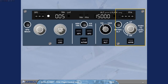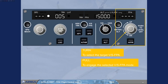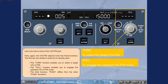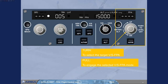Let's now have a look at the vertical speed flight path angle part. The vertical speed flight path angle selector knob has three functions. The turn function enables you to select a target vertical speed or flight path angle. The pull function enables you to engage the selected vertical speed or flight path angle mode. The third function — push — differs from the other push functions. When you push the selector knob, the FM commands an immediate level off: vertical speed or flight path angle equals zero. The value zero is then displayed in the window as well as on the FMA.